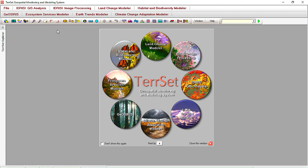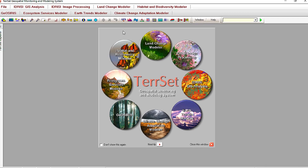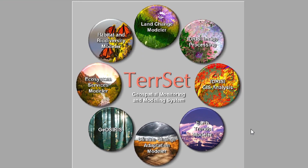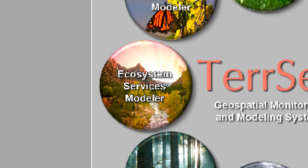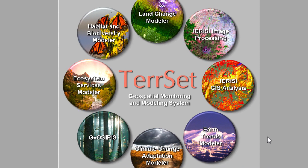All right, everybody, so we're in TerrSet now. If you haven't managed to find TerrSet in the MyCSSUN software portal, those instructions are in a different video. When you get into TerrSet, this is the landing page, and these images here are shortcuts to some custom-designed workflows you can use — like Land Change Modeler, Habitat and Biodiversity Modeling, Ecosystem Services Modeling — a lot of really cool workflows built into this program that aren't in some other GIS programs.